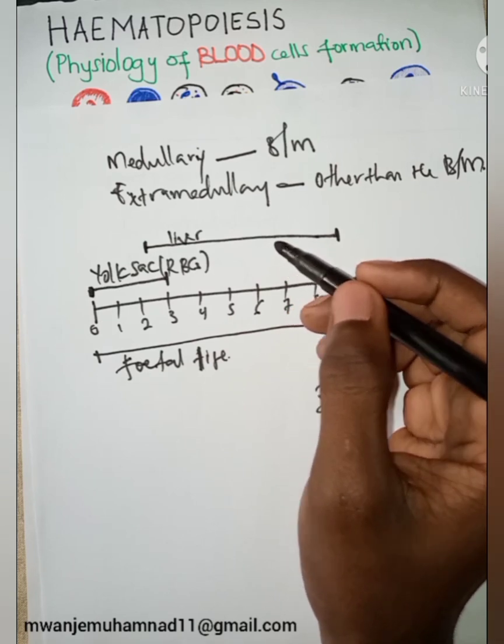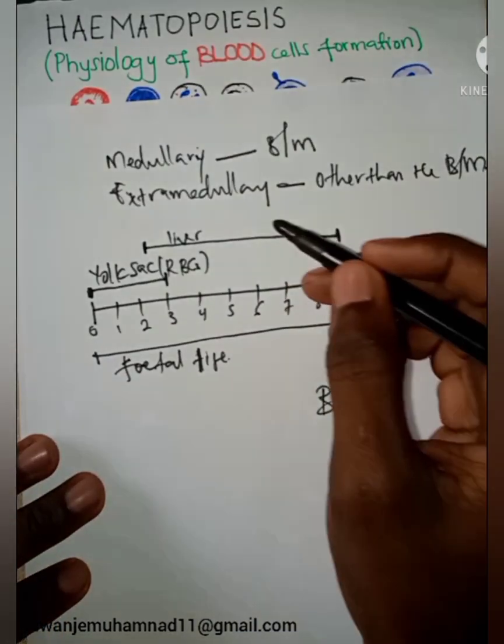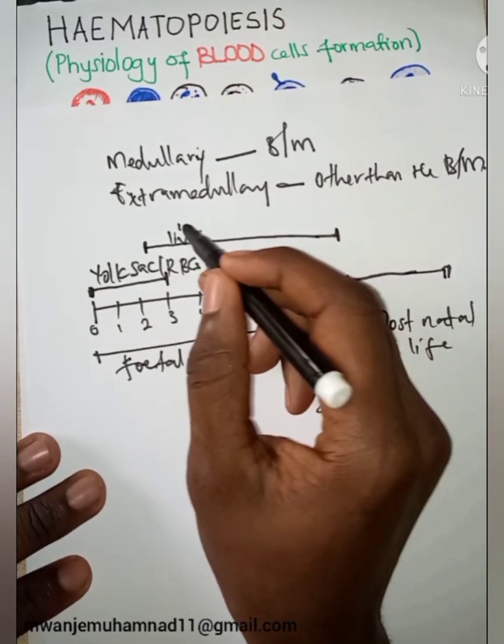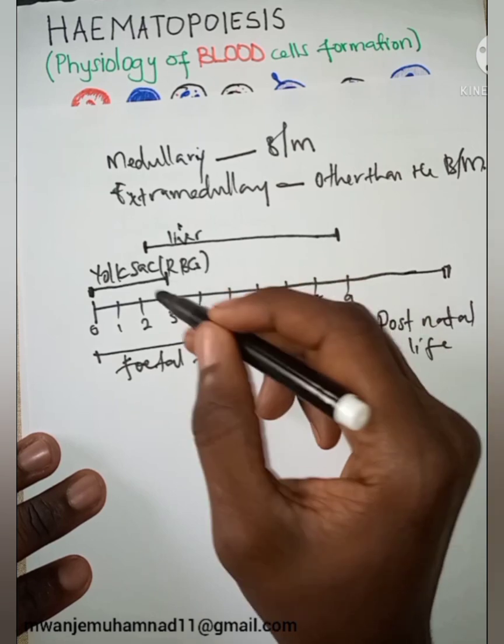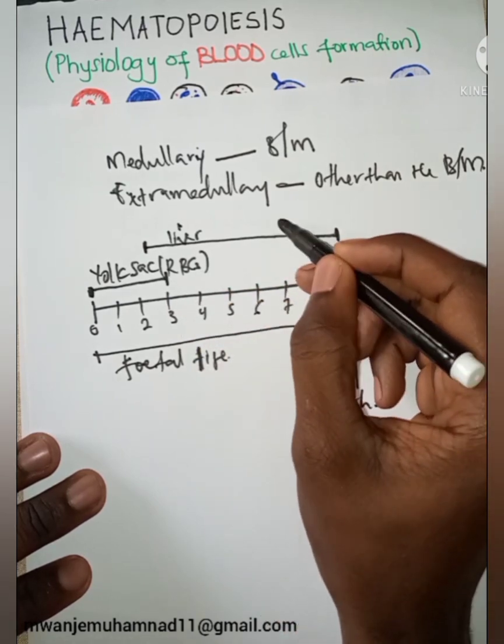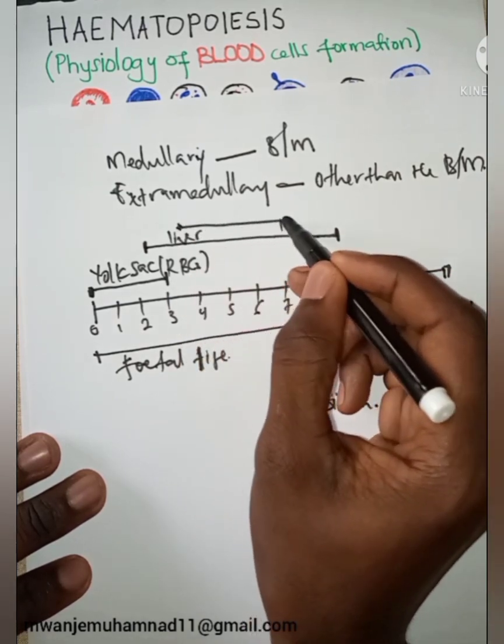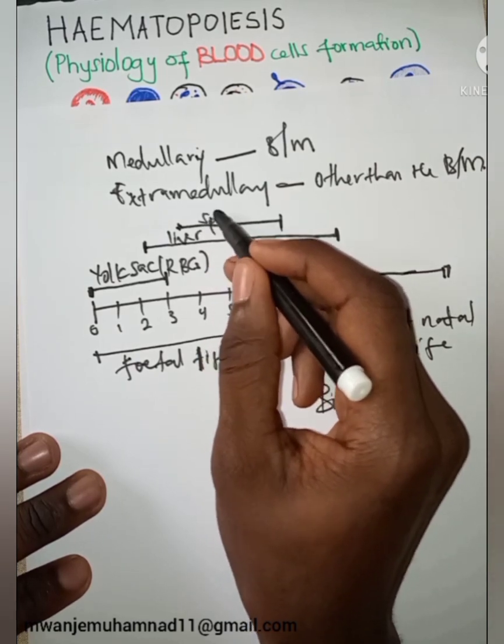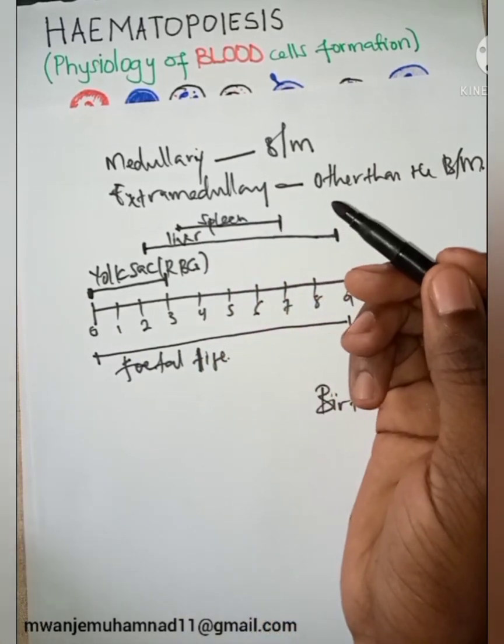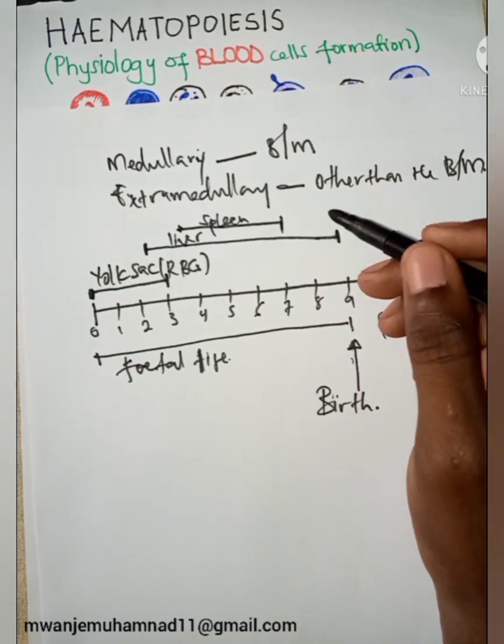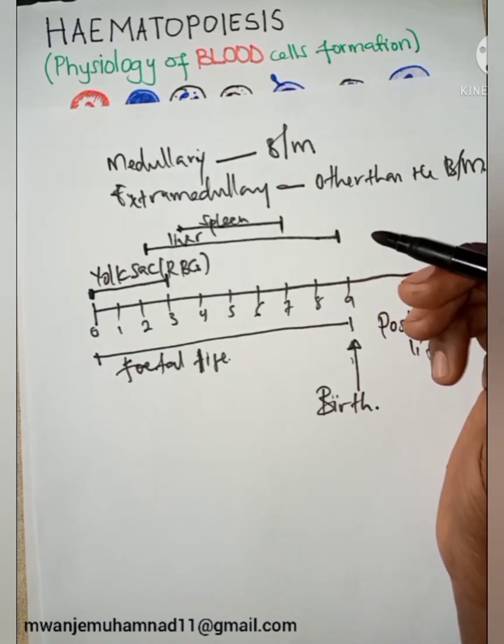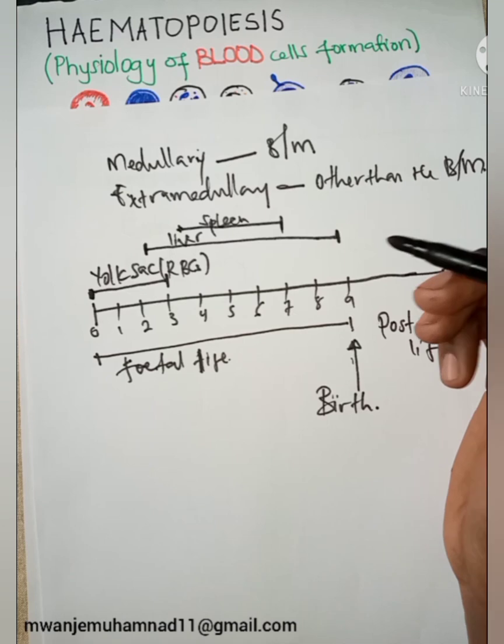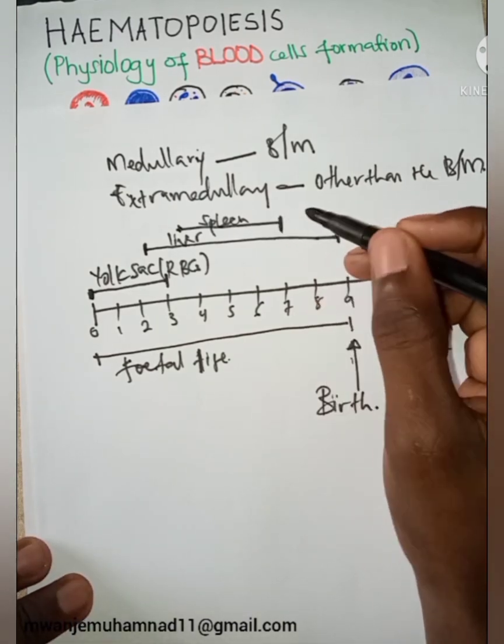At the end of the first trimester up to about the seventh month, the spleen will also come in. The spleen will be forming red blood cells, white blood cells, and so on.